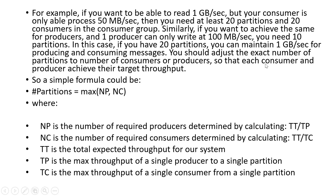You need to adjust the exact number of partitions, consumers, and producers so that each achieves the target throughput. The formula is: partitions = max(NP, NC), where NP is the number of required producers — determined by calculating total expected throughput divided by the max throughput of a single producer in a single partition. You need all these calculations in mind when determining the number of partitions required for your business requirement.